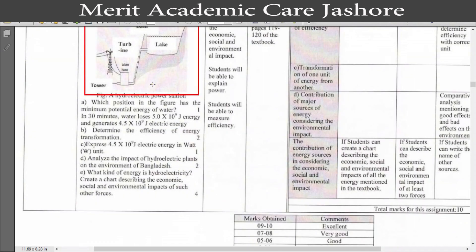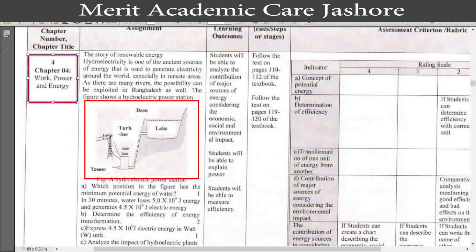Now from the figure, we have to answer five questions. Our first question is: which position in the figure has the minimum potential energy of water? In 30 minutes, water loses 5×10⁹ joule of energy and generates 4.5×10⁹ joule of electric energy. Question B: determine the efficiency of energy transformation. Question C: express 4.5×10⁹ joule of electric energy in watt (W) unit. Question D: analyze the impact of the hydroelectric plant on the environment of Bangladesh. And question E: what kind of energy is hydroelectricity — create a chart describing the economic, social and environmental impacts of such other sources. This is our assignment question; we have to answer these five questions.